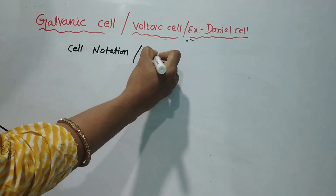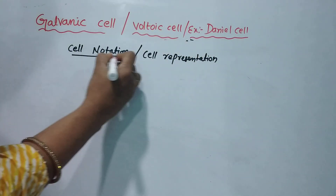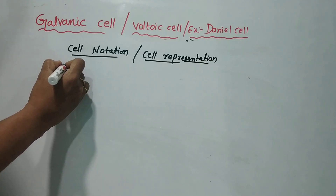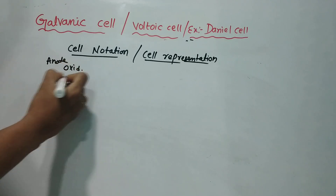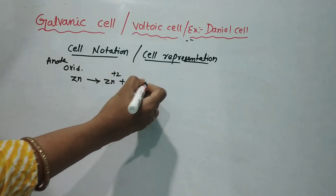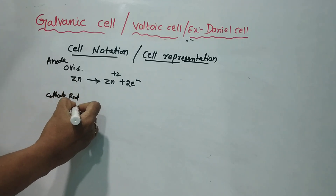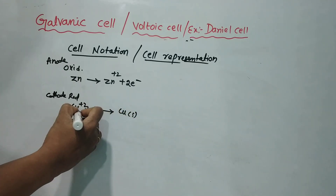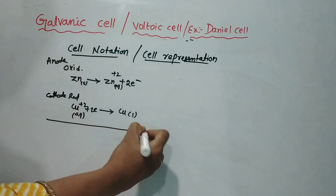Now we will look at cell notation, also called cell representation. In a galvanic cell, the anode half-reaction is an oxidation reaction: Zn → Zn²⁺ + 2e⁻. The cathode half-reaction is a reduction reaction: Cu²⁺ + 2e⁻ → Cu(s). The overall cell reaction is: Zn(s) + Cu²⁺(aq) → Zn²⁺(aq) + Cu(s).